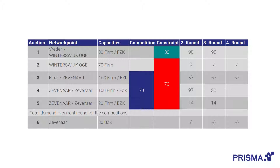In round 4, the demand in auction 1 is reduced to 60. Due to the first small price step, the demand in auction 4 increases to 80, while the demand in auction 5 stays at 14. Since auction 1 is the platform-preferred auction, it is treated as a regular auction and does not have to compete for the available 80 capacity and will, due to the under-demand, proceed with a small price step. Since auctions 4 and 5 now compete for the remaining 70 capacity, small price steps proceed until the overall capacity fulfills the competition constraint.